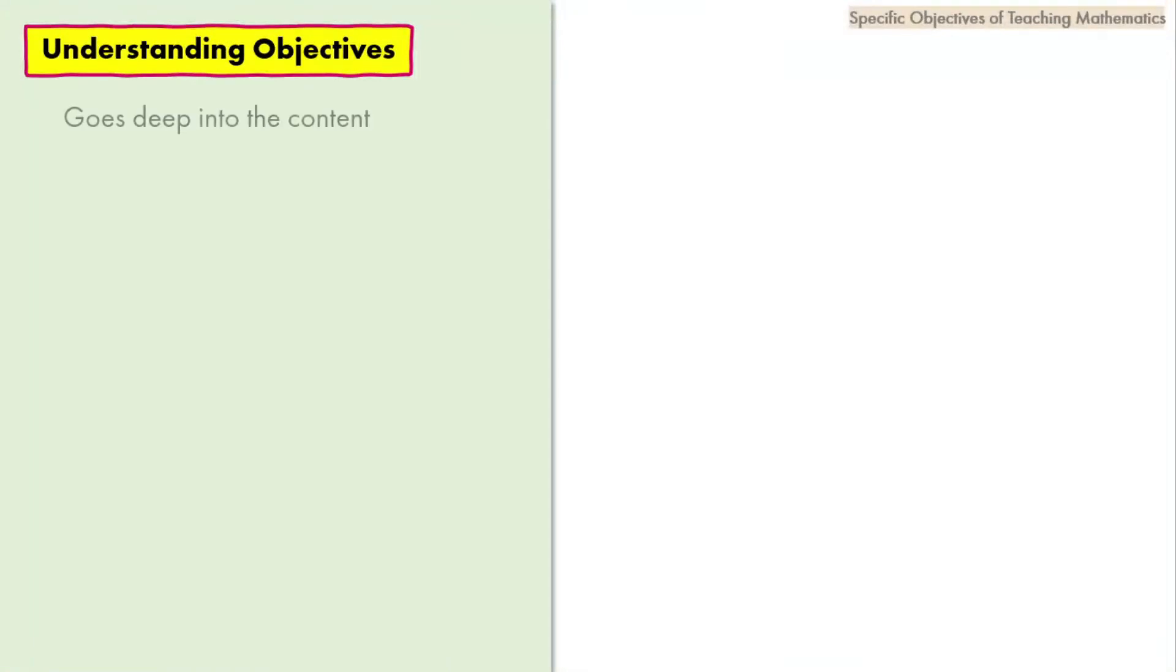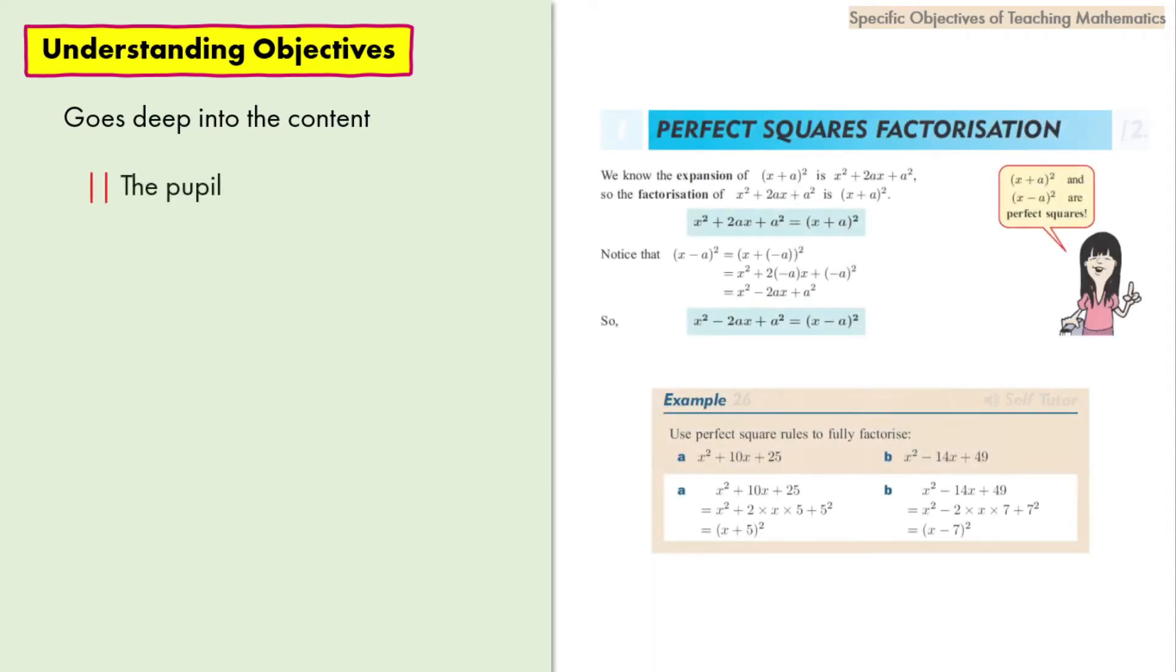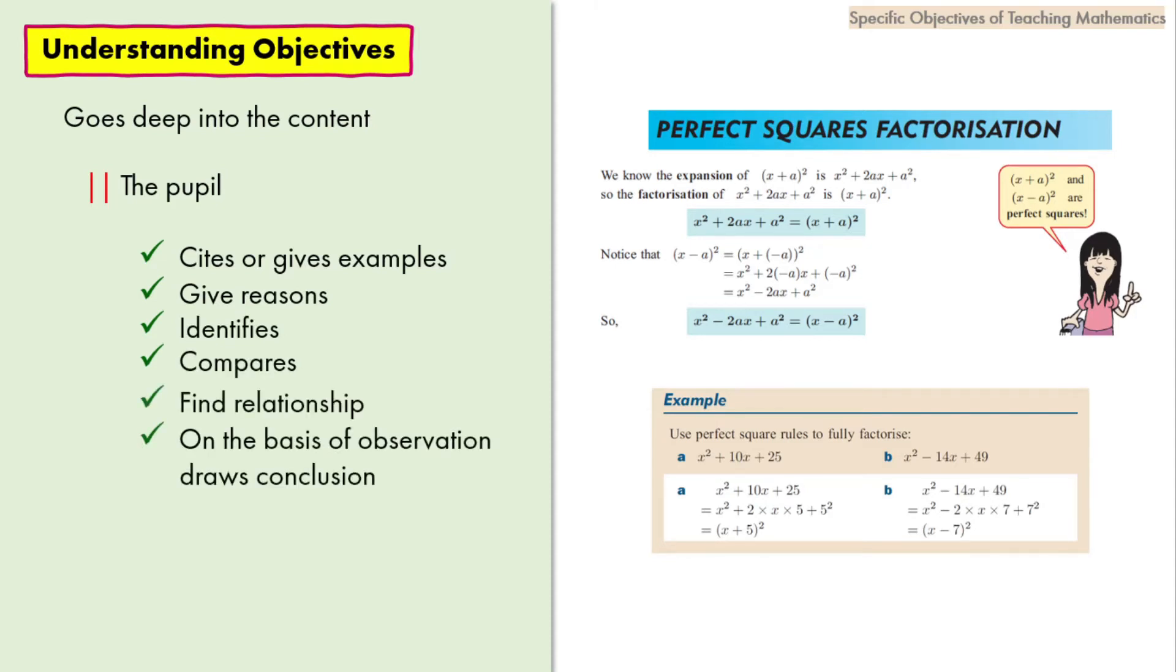Understanding objectives: Here the student goes deep into the content. In this objective, the pupil will be able to cite or give examples, give reasons, identify, compare, find relationships on the basis of observation, draw conclusions, draw inferences or results, convert verbal form to symbolic form or vice versa, classify mathematical data, etc.